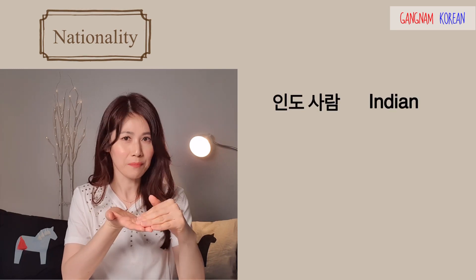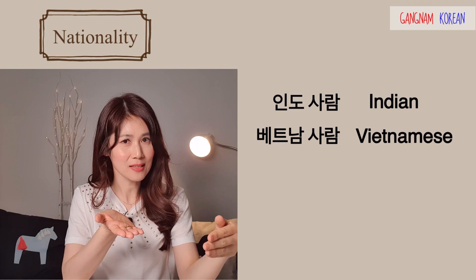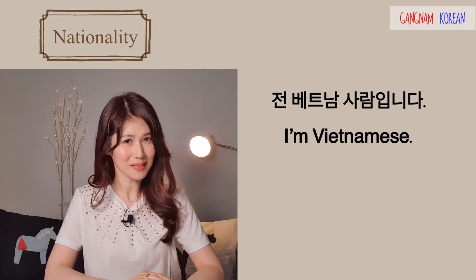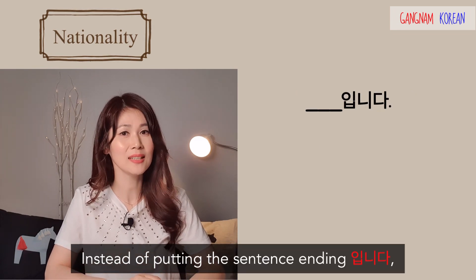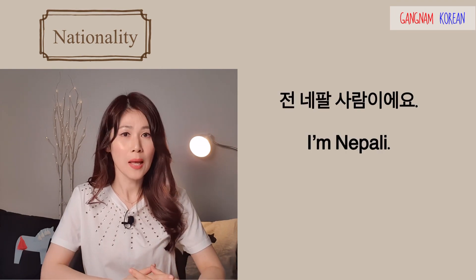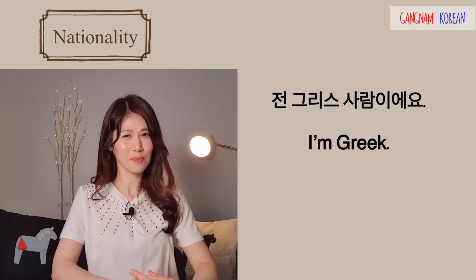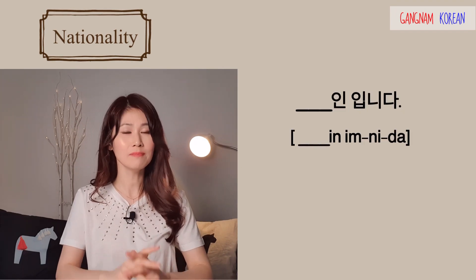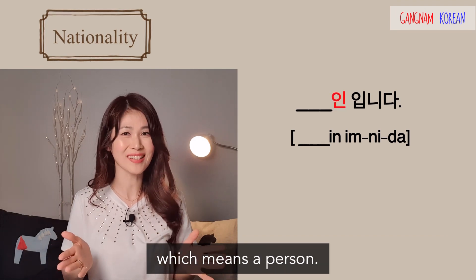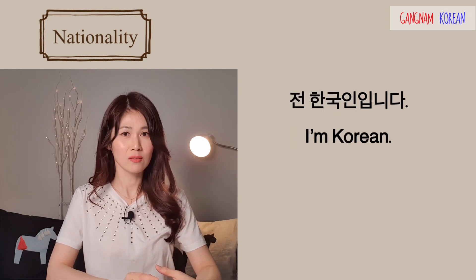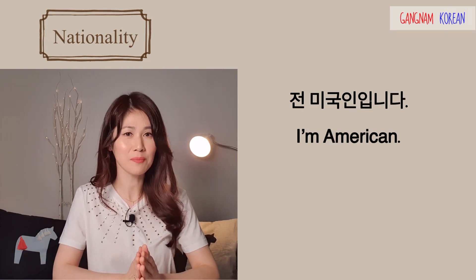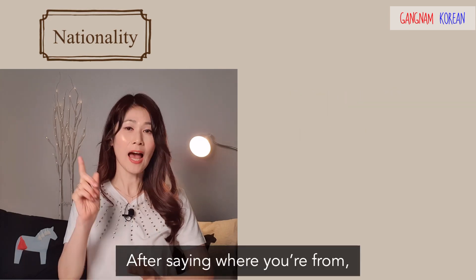So 인도 사람 means Indian, 베트남 사람 means Vietnamese. The sentence goes: 전 인도 사람입니다. 전 베트남 사람입니다. Instead of 입니다, you can say 이에요, which sounds a little more friendly: 전 네팔 사람이에요 — I'm Nepali. 전 그리스 사람이에요 — I'm Greek. You could also use the word 인 instead of 사람, which also means 'a person'. 전 한국인입니다 — I'm Korean. 전 한국인이에요. 전 미국인입니다. 전 미국인이에요.